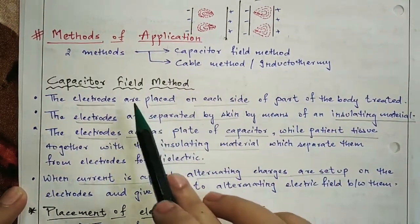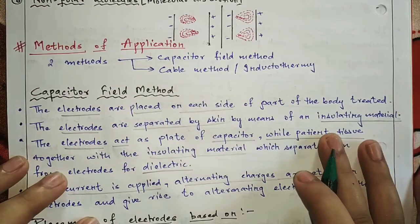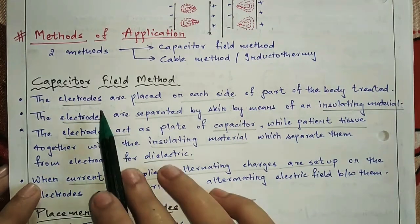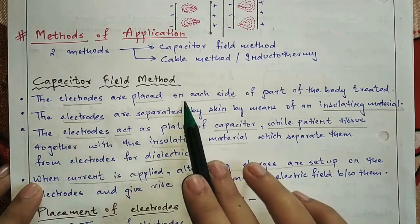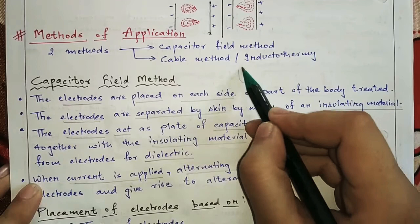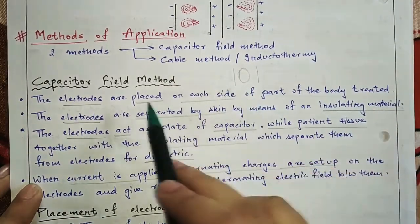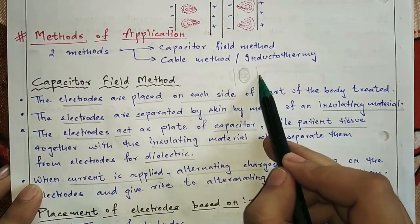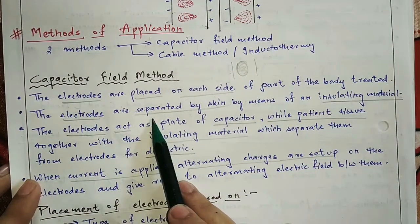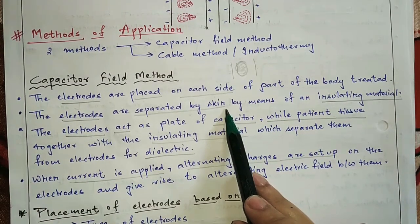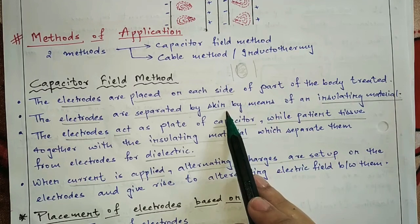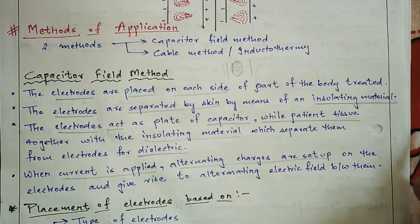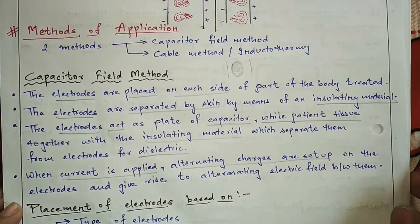Capacitor field method. The electrode that we use in SWD, we understand it as a plate of a capacitor. The electrode — as we are calling it — is placed on each side of the part to be treated. This electrode is not in direct contact with the skin; it is separated by an insulating material. The insulating material can be a roll of bed sheet or any clothing that works as an insulating material.